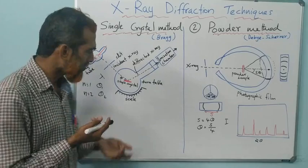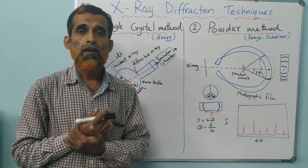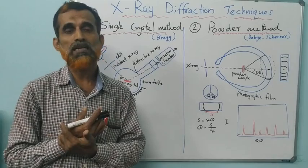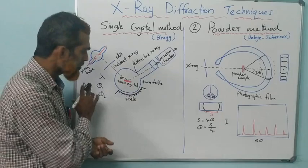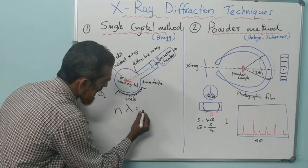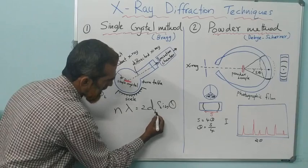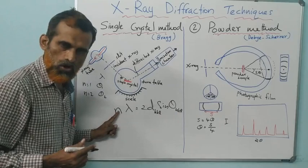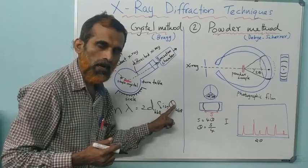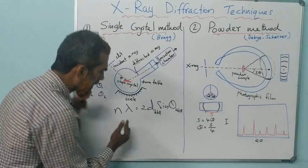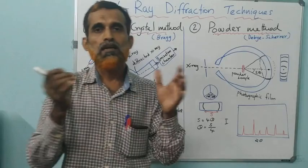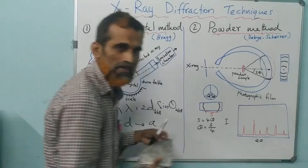For example, now the 110 plane is oriented and you measure theta for first order, second order, and so on. By rotating the crystal you get different planes oriented for diffraction and you are measuring theta. Then, using Bragg's equation nλ = 2d sinθ, for d(hkl) at angle θ(hkl), taking first order where n = 1 and lambda is known, when you get theta you can calculate d. Once you get d, you can then get the lattice parameter a. So you obtain the dimensions of the crystal and thereby establish the crystal structure.